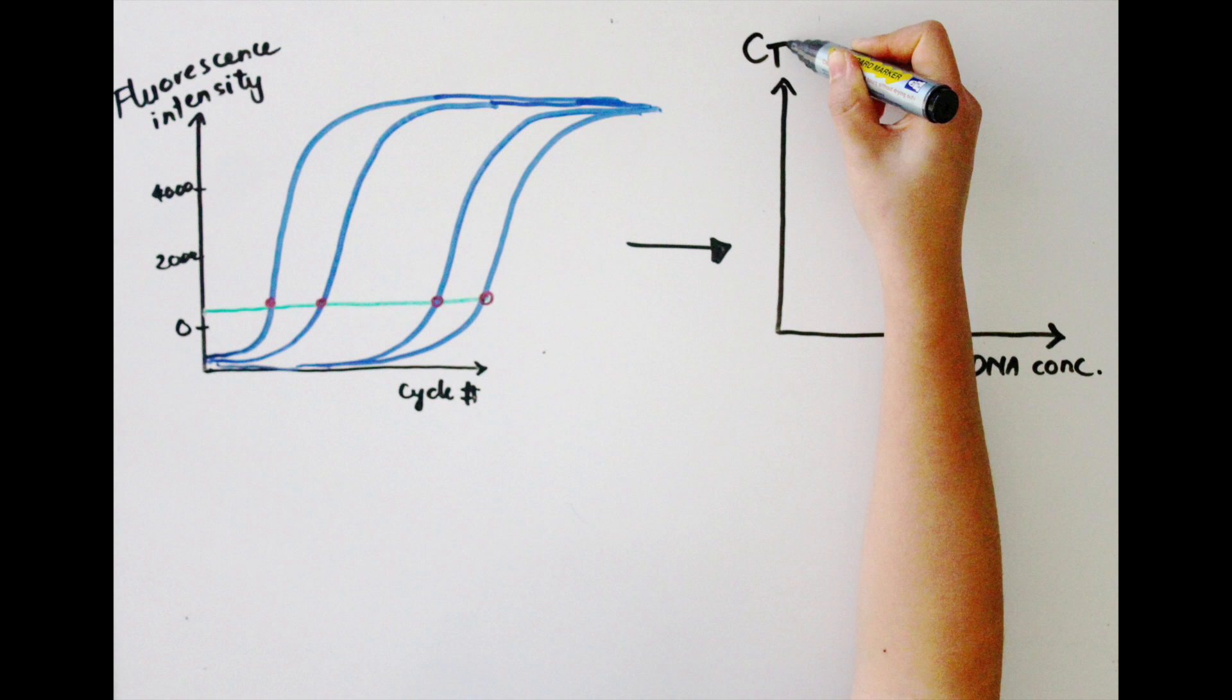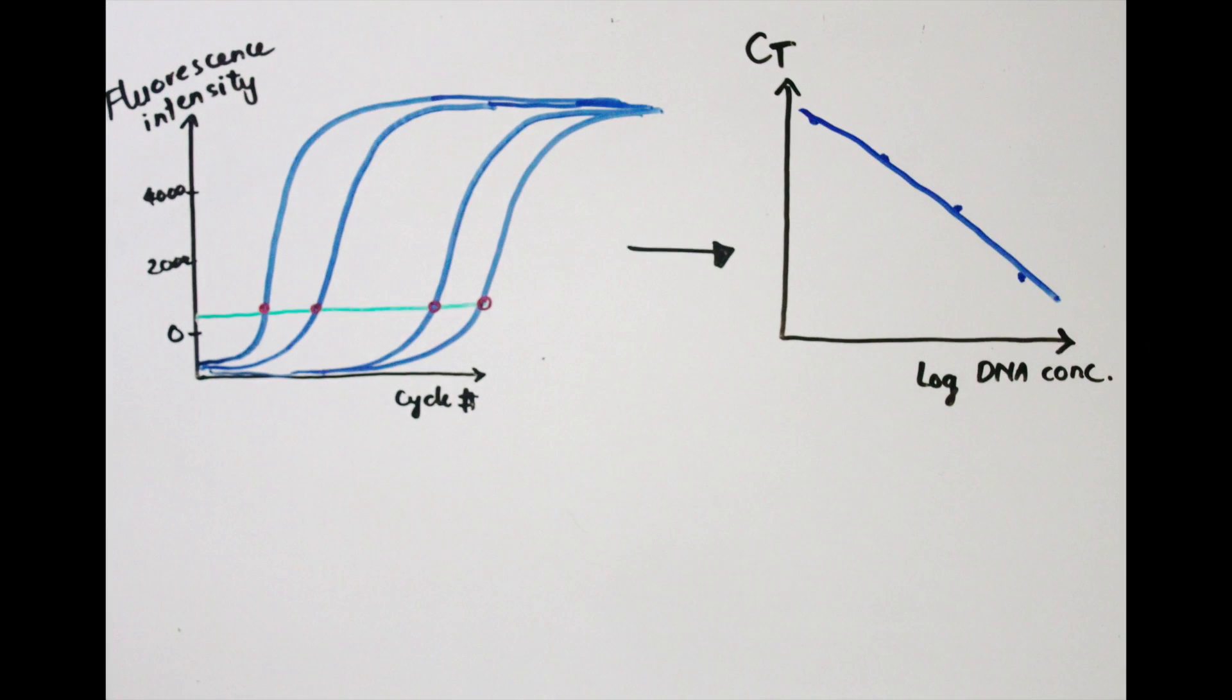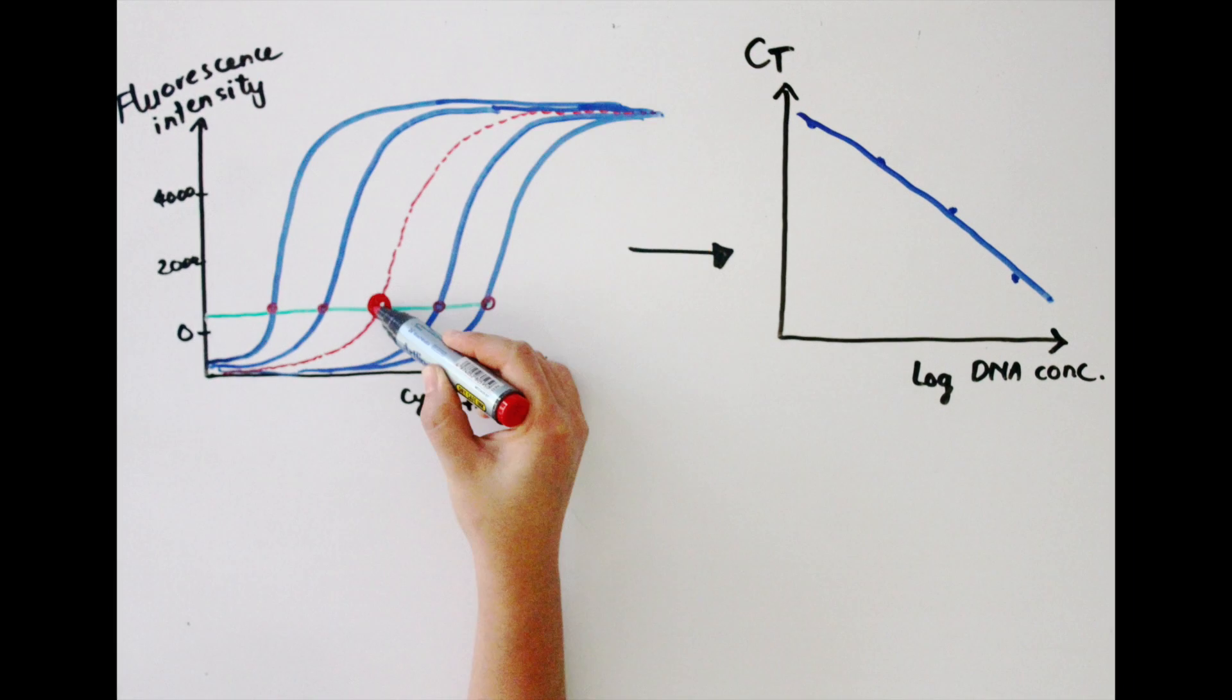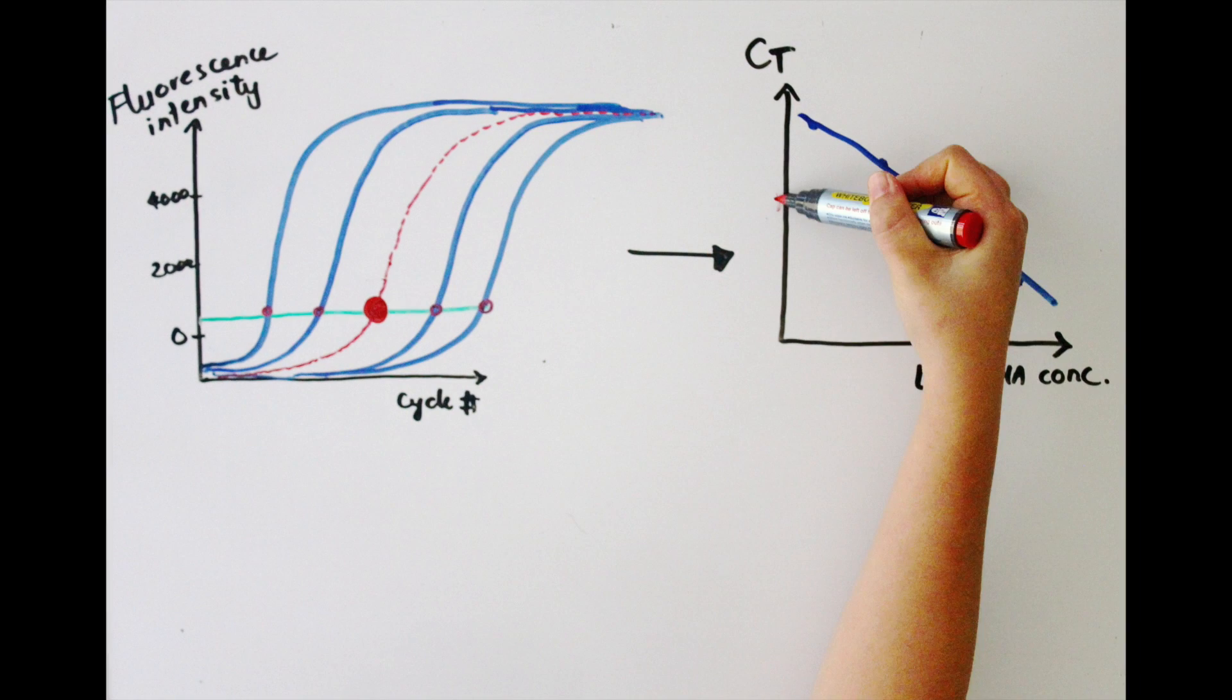So if you plot original DNA concentration against the CT values, you'll have a standard curve like this. Now let's say the PCR plot of your unknown DNA sample is somewhere here, which corresponds to this CT value on the standard curve here.